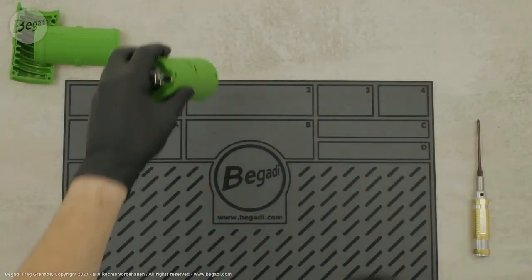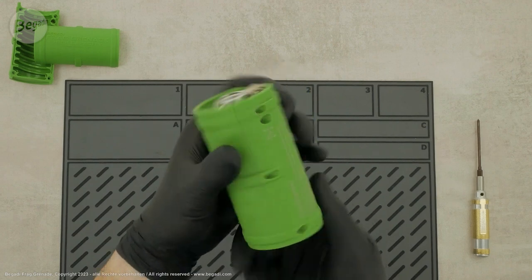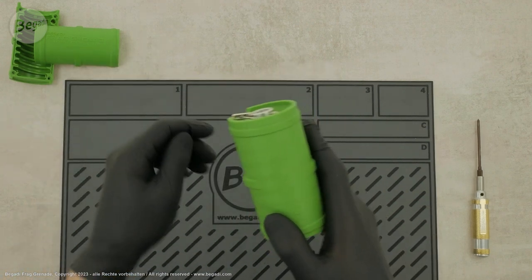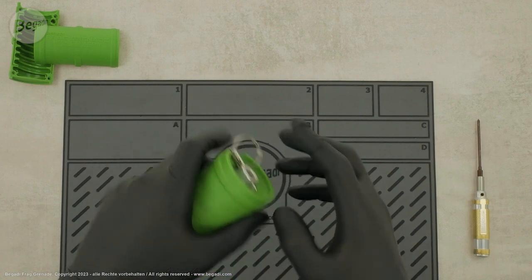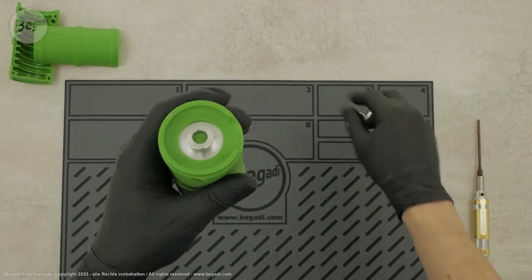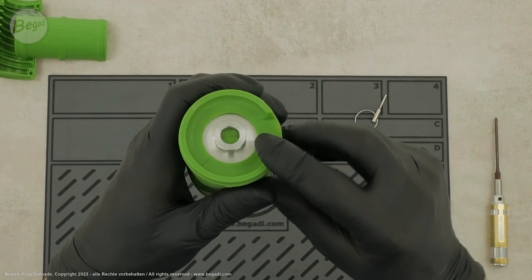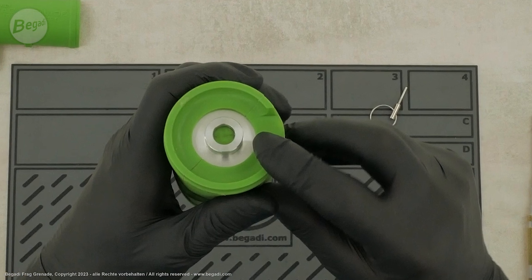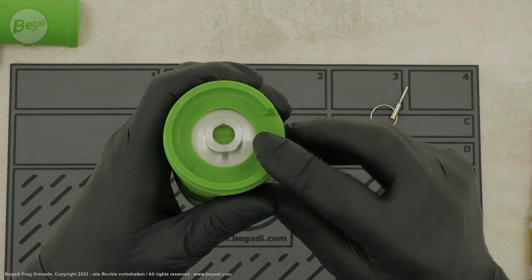Each grenade is delivered with two different interchangeable shells. Before disassembling the grenade, make sure it is not pressurized. Once you have pulled the safety pin, the triggering mechanism should remain down. This indicates that the grenade is not pressurized.